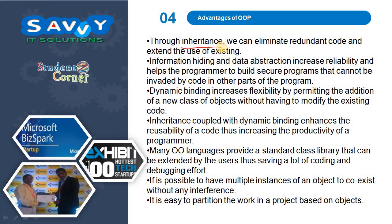The advantages of Object Oriented Programming include inheritance — the mechanism of deriving a new class from an already existing class. Through inheritance we can eliminate redundant code and extend the use of existing classes. Information hiding, meaning data abstraction, increases reliability and helps the programmer to build secure programs.